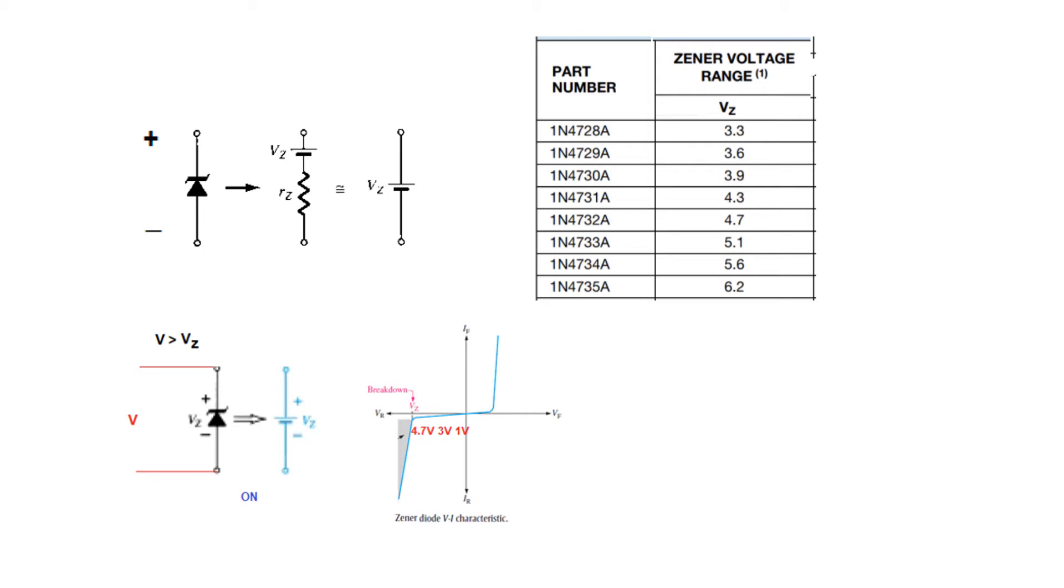What will happen if the applied voltage is 3 volt or 2 volt or 1 volt? Since it is less than the breakdown voltage therefore the diode will remain off. And so we show it with an open circuit. The diode is off here because the applied voltage is less than the Zener voltage. Here the applied voltage is greater than the Zener voltage, therefore this is on.